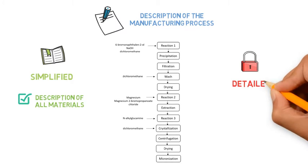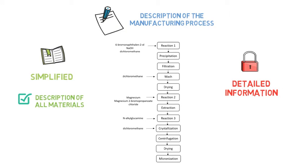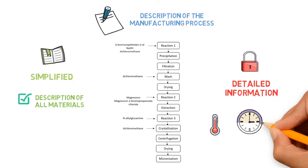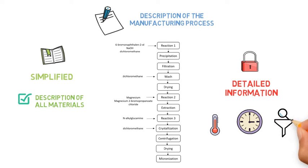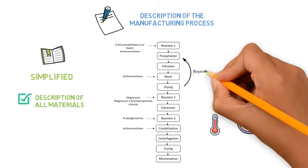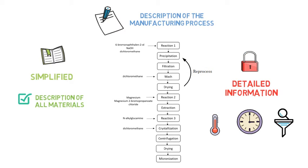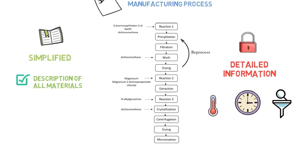In the Restricted Part, more detailed information will be described, including the conditions that are used, such as temperature, pressure, operation time, and process controls. In case reprocess or recovery of materials can be applied, these procedures also need to be clear in the DMF.